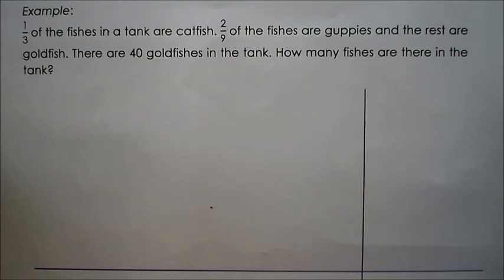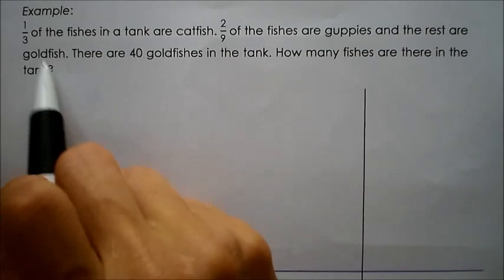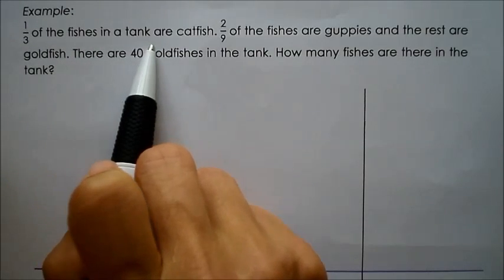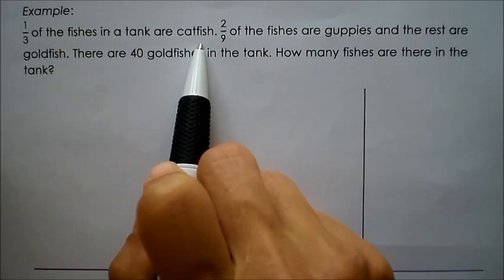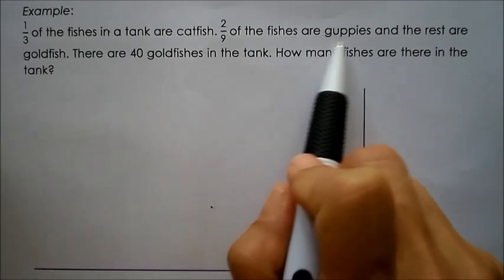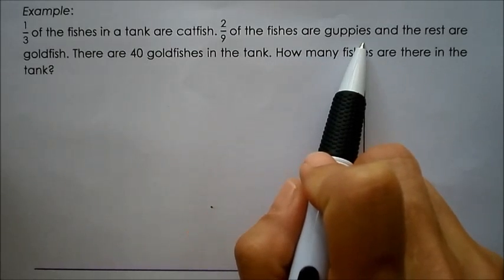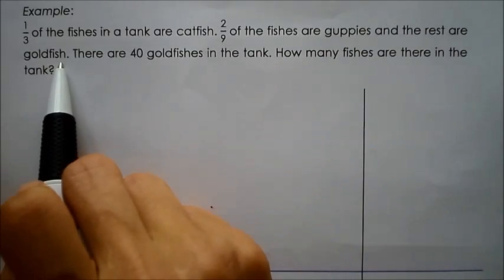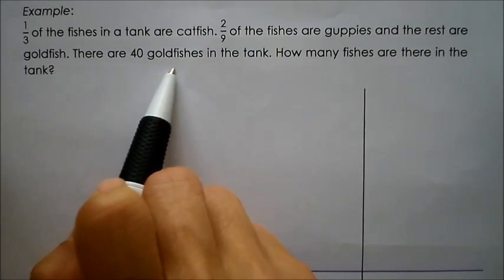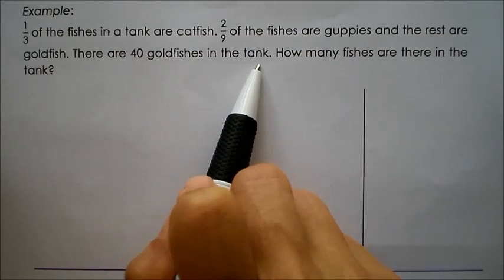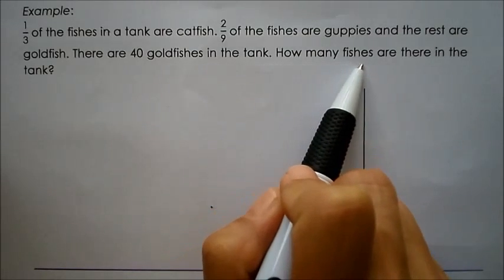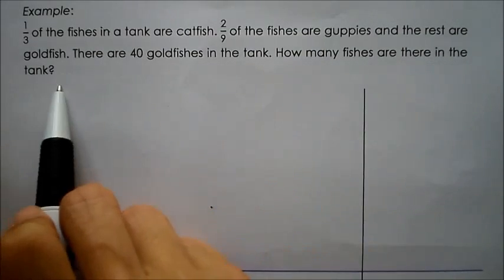Let's read the question. One-third of the fishes in a tank are catfish. Two-ninth of the fishes are guppies, and the rest are goldfish. There are 40 goldfishes in the tank. How many fishes are there in the tank?